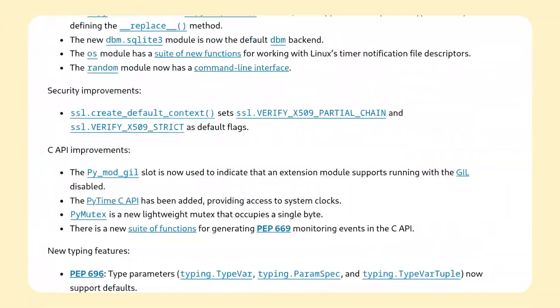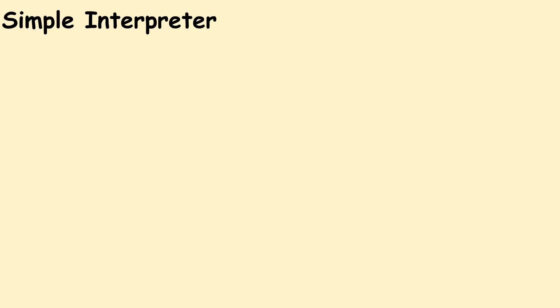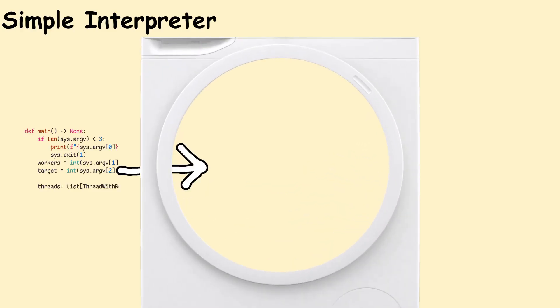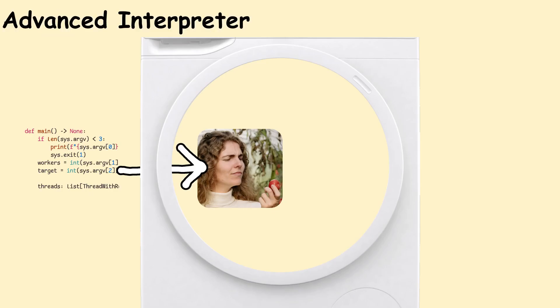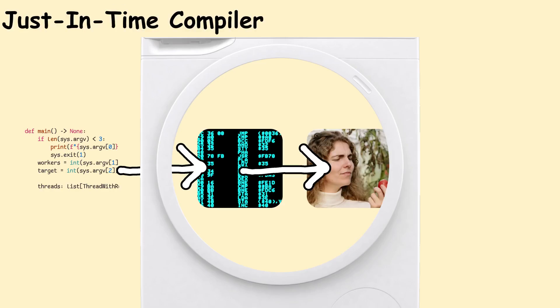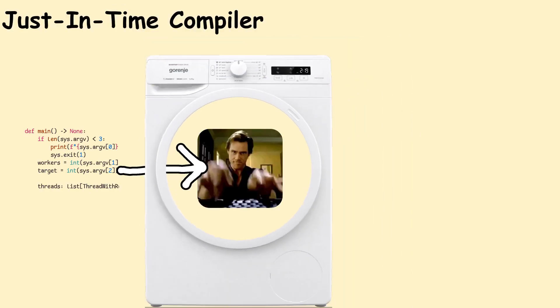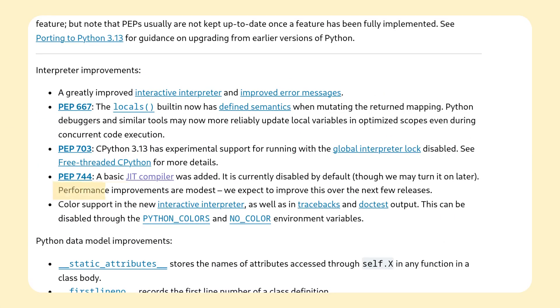GIL aside, Python 3.13 also includes an experimental JIT mode. If you don't know what a JIT is, here is a quick, mostly true explanation. The simplest version of an interpreter is basically a program which parses the source code and directly evaluates it. More advanced interpreters sometimes internally compile the code to bytecode and then evaluate that. A JIT compiler takes that even one step further and compiles the source down to the target architecture's machine code, either directly or via some intermediate steps. The release notes say that the speed improvements are marginal for now, so I didn't even bother with benchmarks.